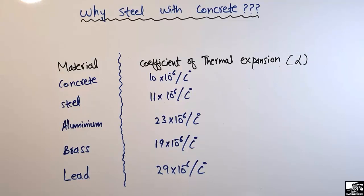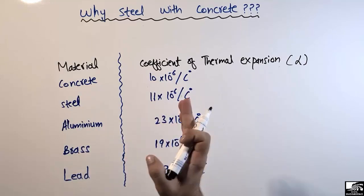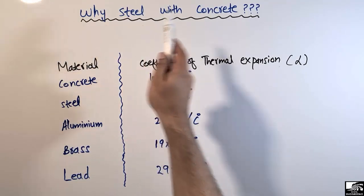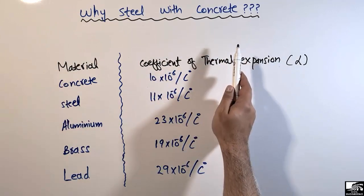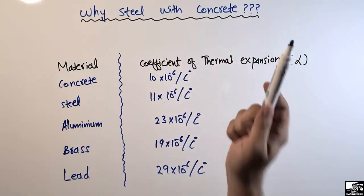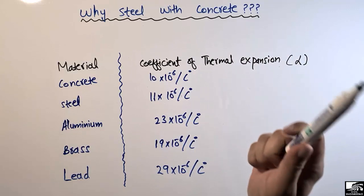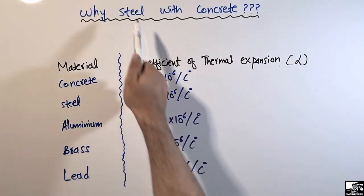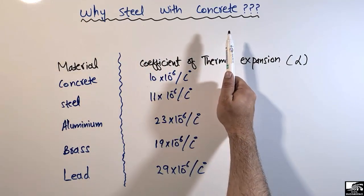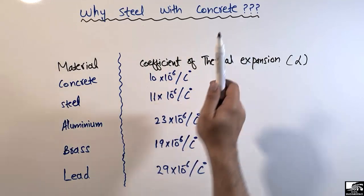Hello guys, welcome back to the Seven Engineering YouTube channel. Please subscribe to our channel for daily Seven Engineering videos. In today's lecture, we will answer the question: why do we use steel with concrete? Why not aluminum, brass, glass, or any other material? Why do we always use steel bar with concrete?